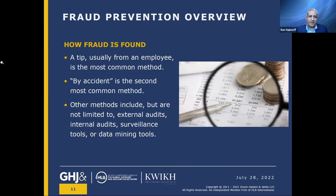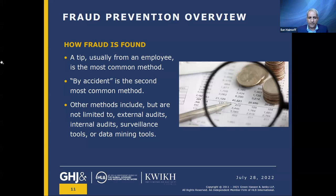How fraud is typically found is unbelievable, but in general, it's either a tip by an employee, vendor, or third party, or by accident. Those are the two main ways fraud is uncovered. You may have other methods such as external audits, internal audits, surveillance tools, and various data mining tools. But what's unbelievable is it's actually going to be either a tip or by accident — that's typically how it's found.